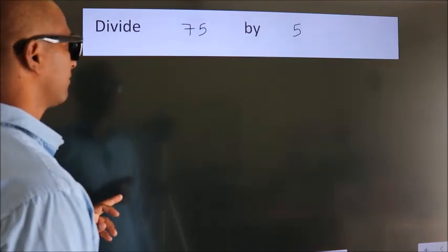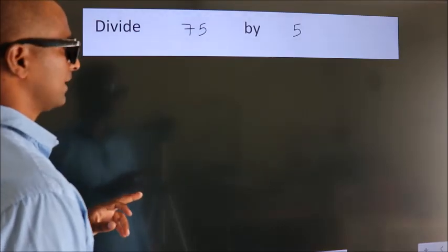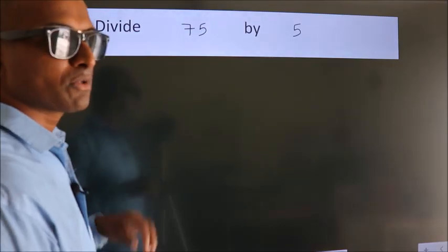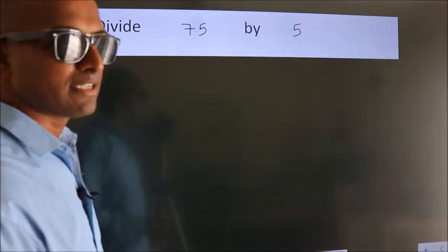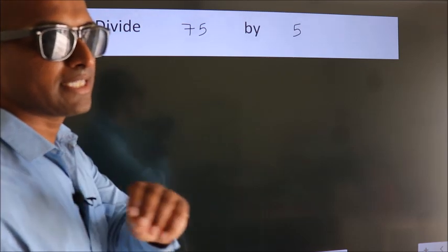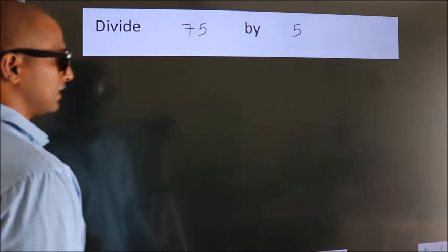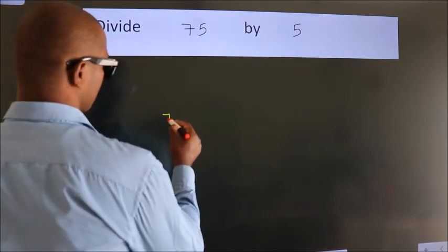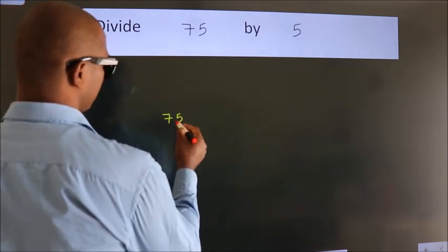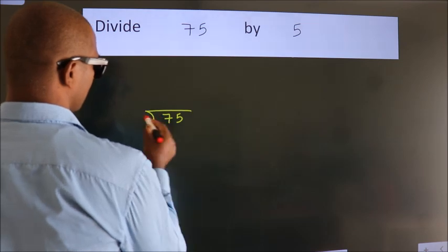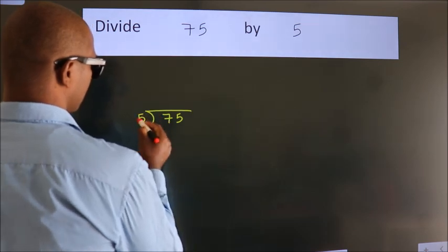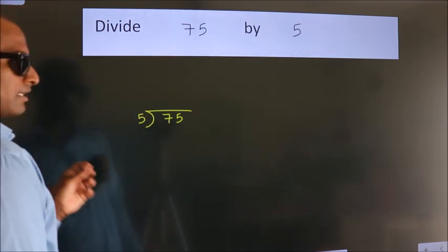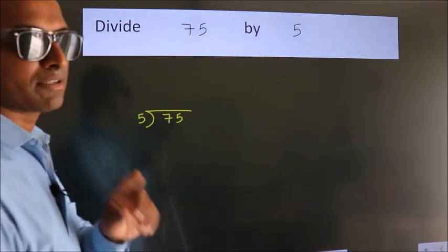Divide 75 by 5. To do this division, we should frame it in this way: 75 here, 5 here. This is your step 1.